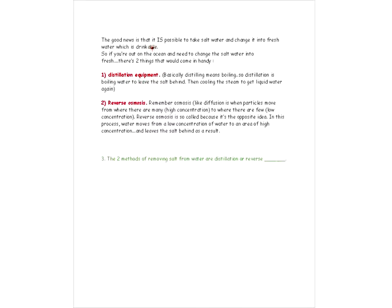Even if we have salt water, we can make it into drinkable water — it's possible to take the salt out. There are two different ways we can do this: distillation equipment or reverse osmosis. Distillation basically involves boiling water to leave the salt behind. You boil the water away, and then when you expose the steam to something cold — like a cold glass — water condenses on it. So you boil it, cool it down, collect just the water, and separate it from the salt.